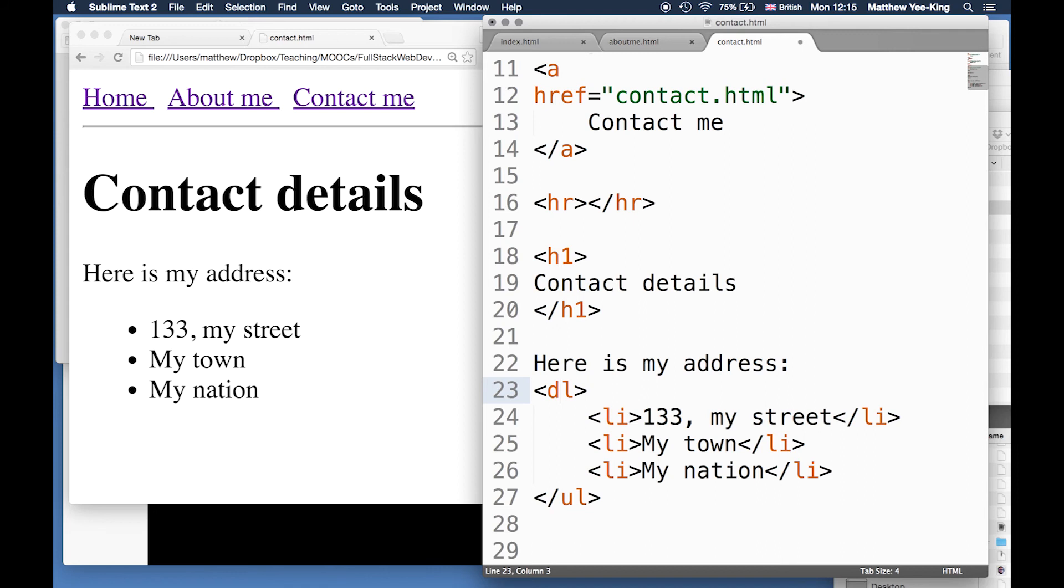There's one more called the description list which you can go and look at yourself - we're going to see it in a later lesson. So that's it. We've just seen how to use some other types of tags - the image tag and two types of list tags. You've seen that we can put one tag inside another tag.